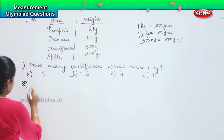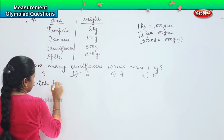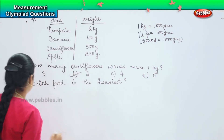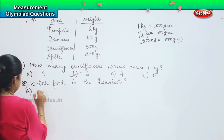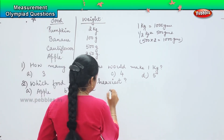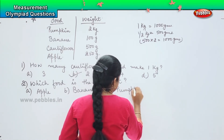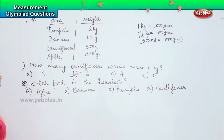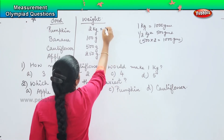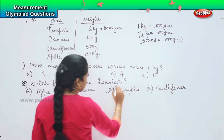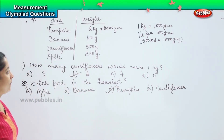The next question is: which food is the heaviest? We need to express everything in the same unit. 1 kg is 1000 grams, which means 2 kg is equal to 2000 grams. So which is the heaviest now? It is the pumpkin, which weighs 2000 grams or 2 kg.